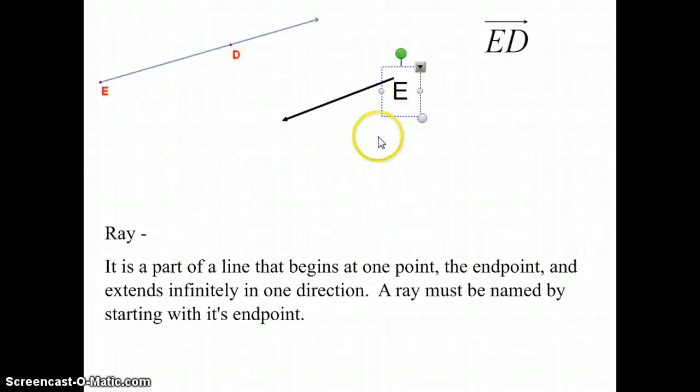If this had an E and a D, even though it starts at E and goes to D, you would still use the same ray symbol going to the right, not the left.